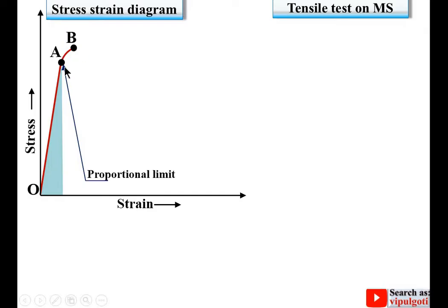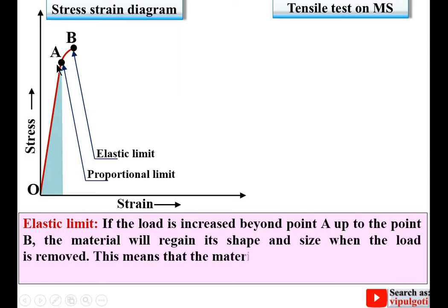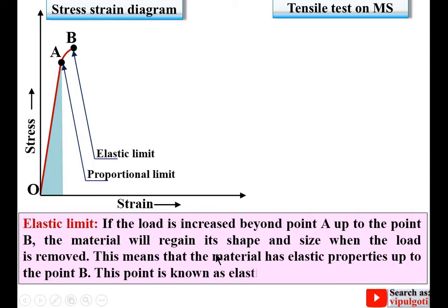If you further increase the load on the Universal Testing Machine, then from A to B it is a curve, and this point B is known as the elastic limit. If the load is increased beyond point A up to point B, the material will regain its shape and size when the load is removed. This means the material has elastic properties up to point B. The left side of this line represents the elastic zone and the right side represents the plastic zone.